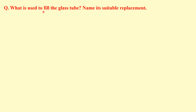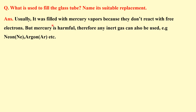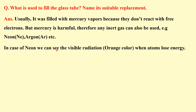What is used to fill the glass tube, and what is a suitable replacement? Originally the tube was filled with mercury vapors because they do not react with free electrons, but mercury is harmful. Therefore any inert gas can be used, such as neon or argon. In the case of neon, we can see visible radiation when atoms lose energy — we will see an orange color in the tube.